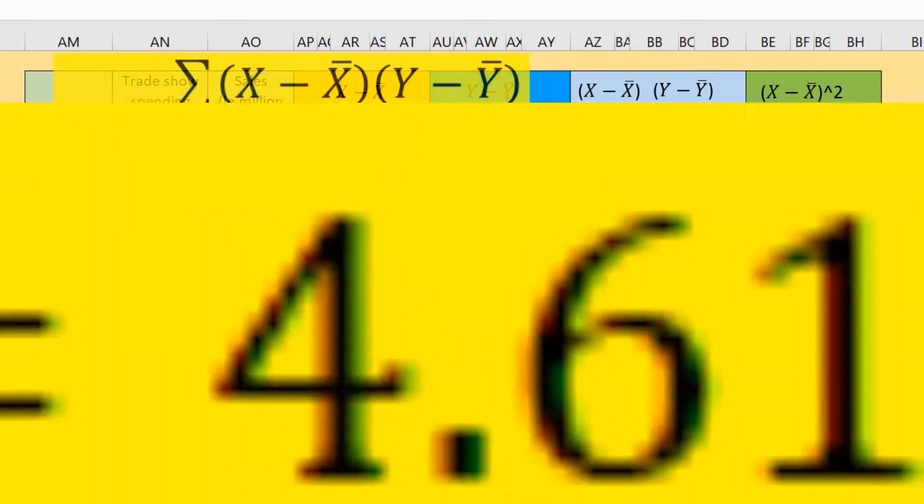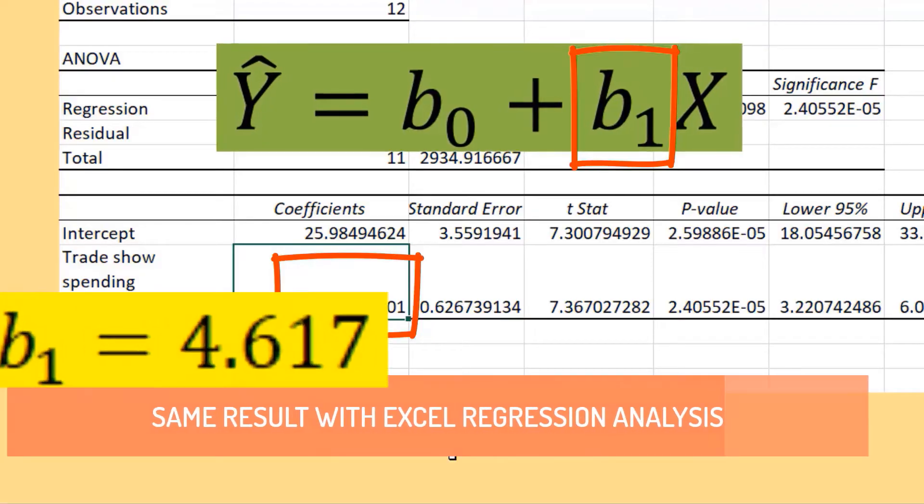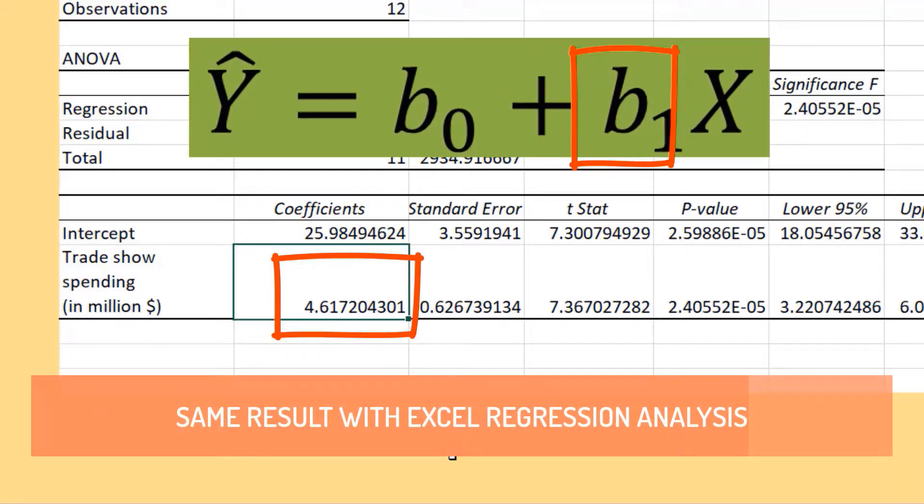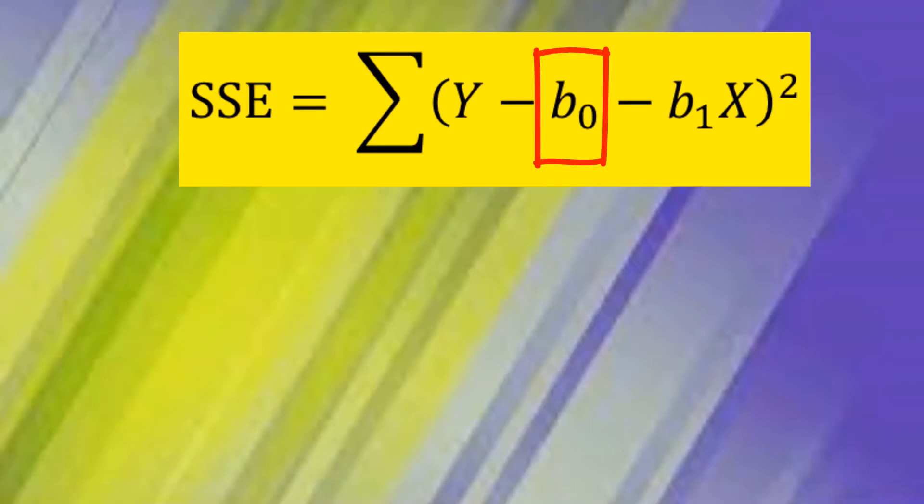The result is 4.6172, the b1 slope coefficient. Exactly the same results with Excel regression analysis and scatter plot. Now, how about b0 intercept?